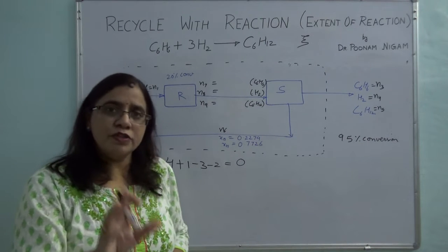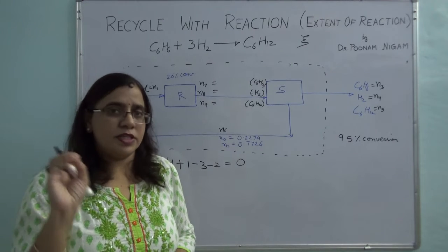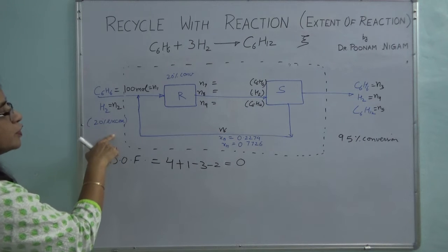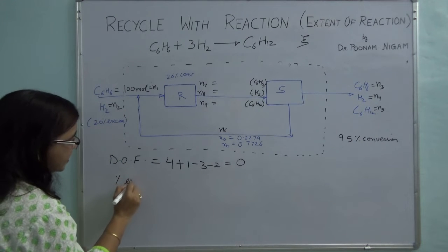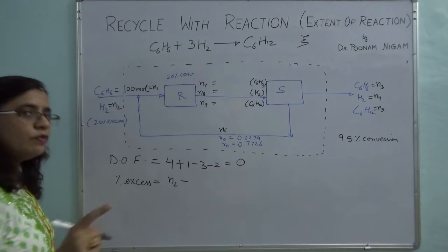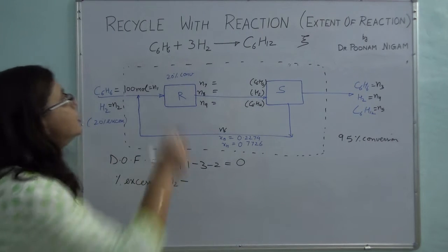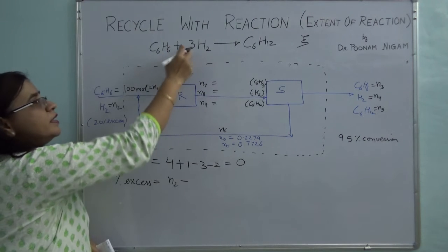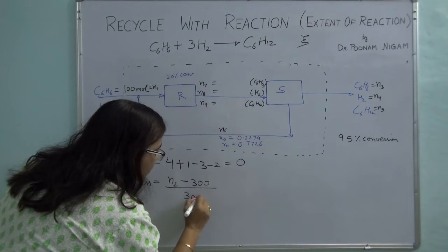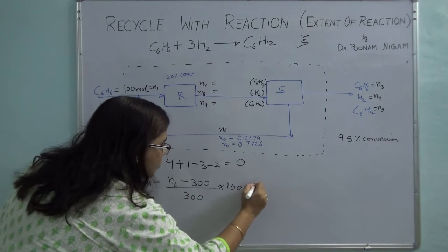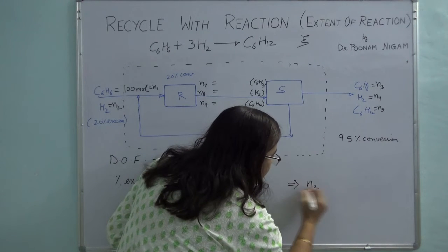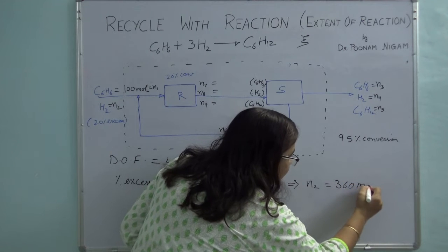Let's first make use of the process specifications. Hydrogen is in 20% excess. To find percent excess: that is N2 minus the stoichiometrically required amount, divided by the stoichiometric amount, multiplied by 100, equal to 20. One mole of benzene requires three moles of hydrogen, so 100 moles will require 300 moles. Solving this, I directly get N2 equal to 360 moles.